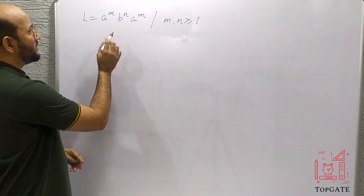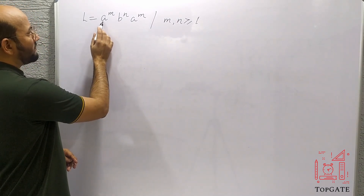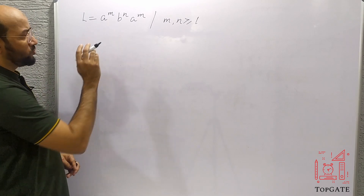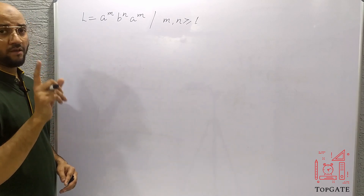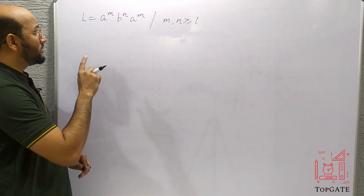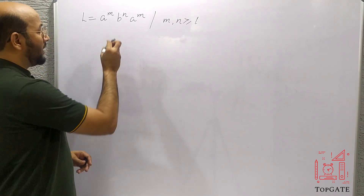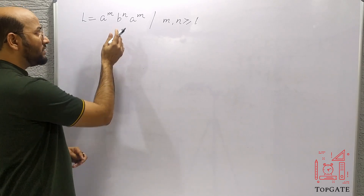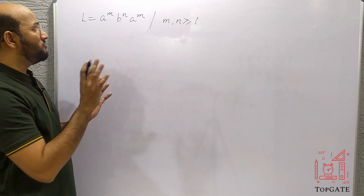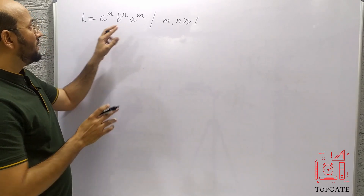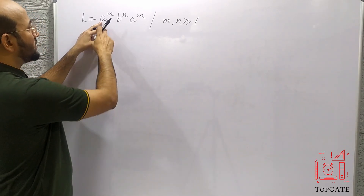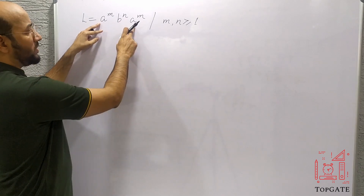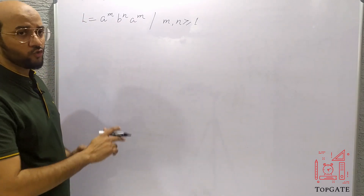We can have any number of A's in the first part, but it must be at least one — not zero. Then we can have any number of B's, and then the same number of A's that we had in the first part must appear at the end.